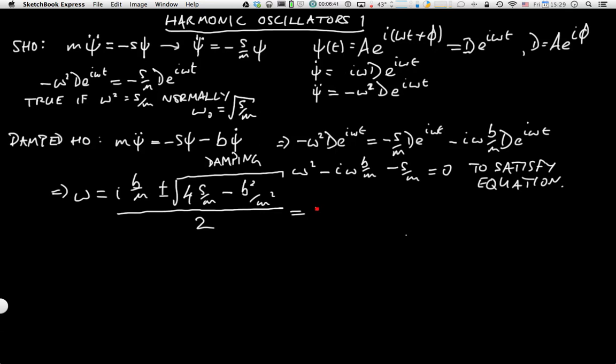That's all divided by two. So that's equal to i b over 2m plus or minus the square root of s over m minus b² over 4m².